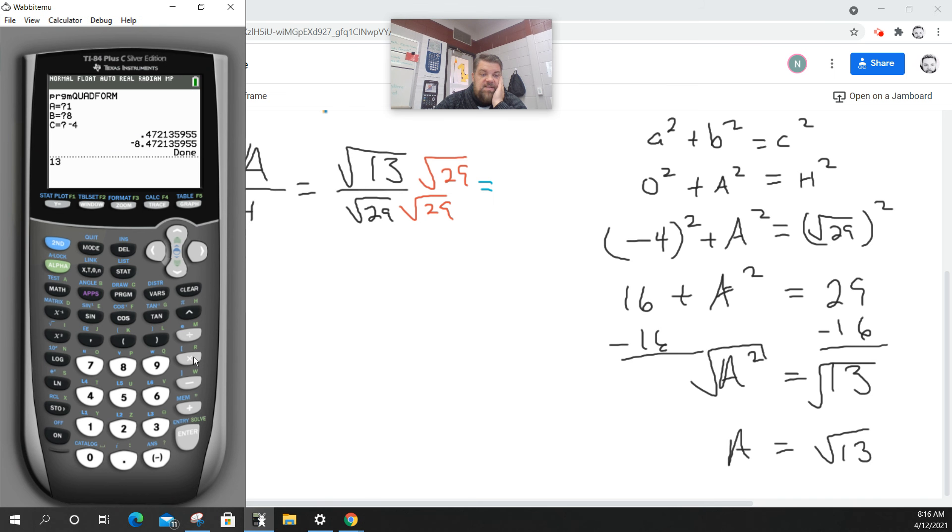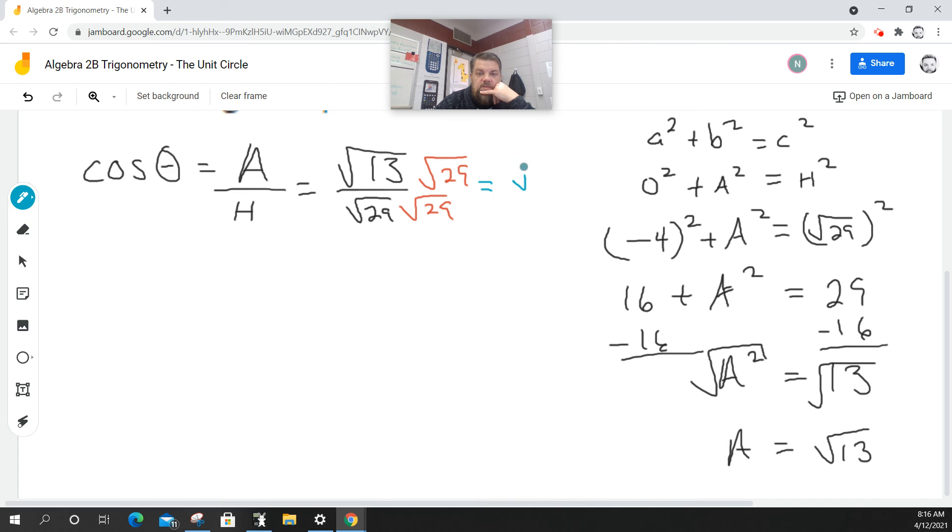So that gives me, let's do some math on this. 13 times 29 equals the square root of 377 all over 29. And that's the answer. Thank you.